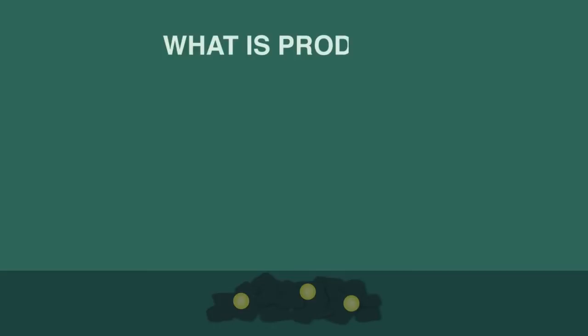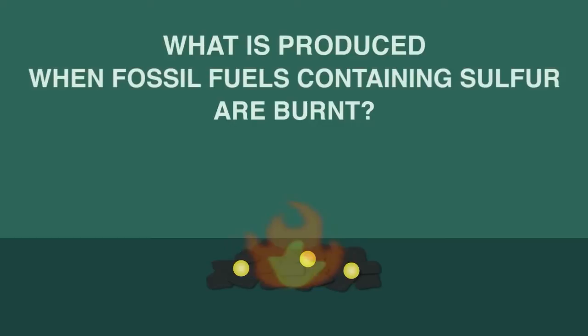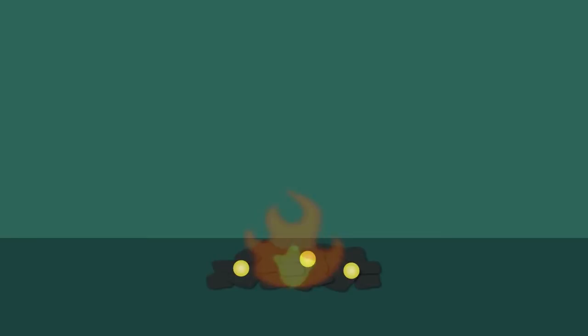What do you think is produced when fossil fuels containing sulfur are burnt? Pause the video whilst you think. When the coal is burnt, the sulfur and the carbon atoms join with oxygen from the air and are released into the atmosphere as carbon dioxide and sulfur dioxide.